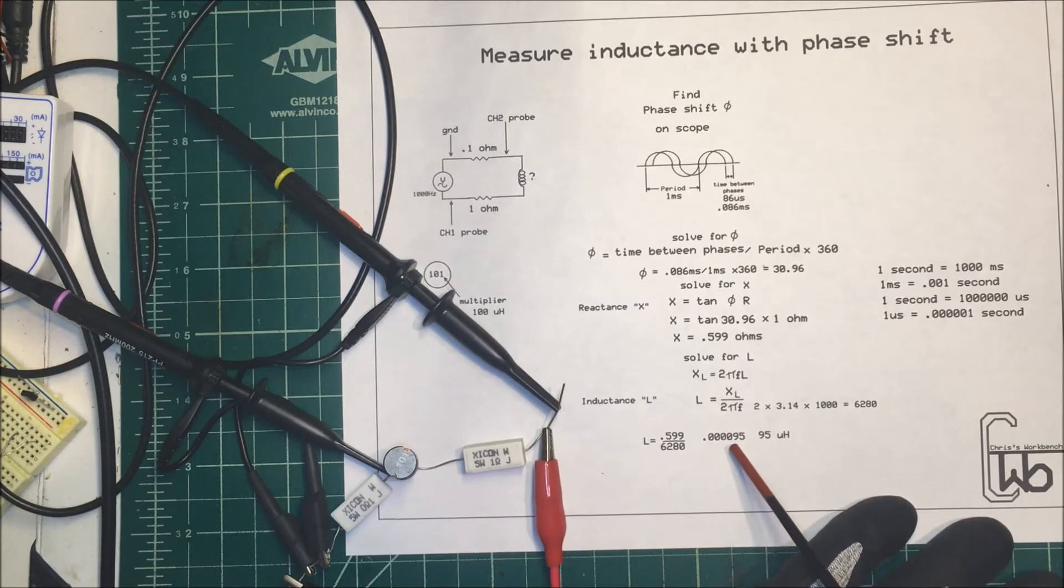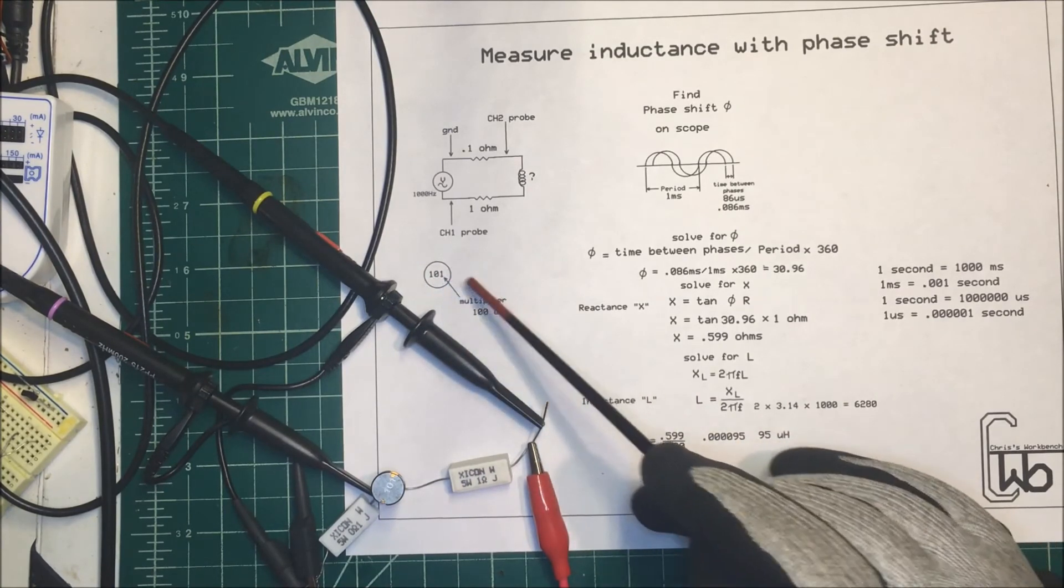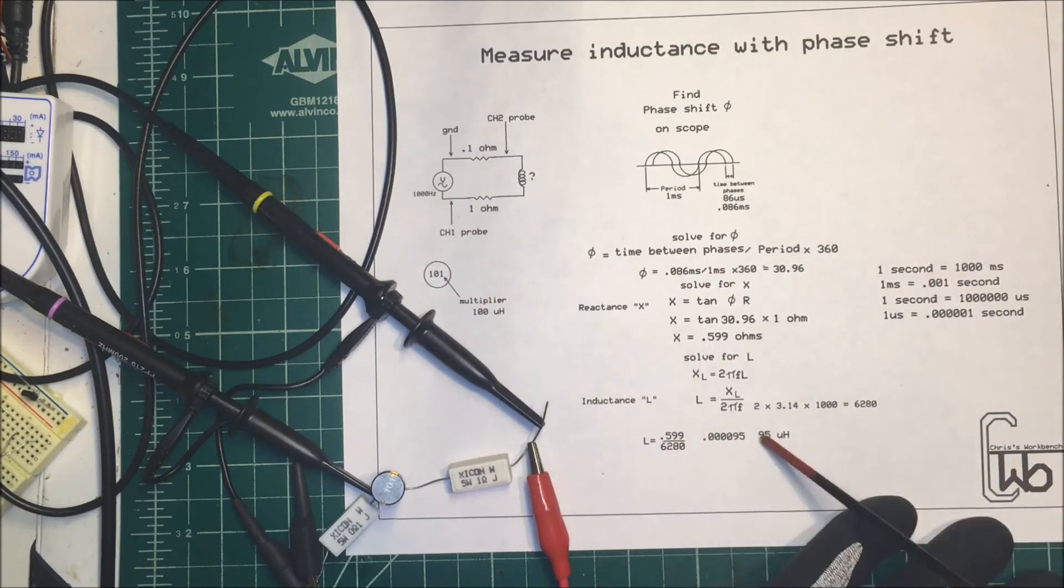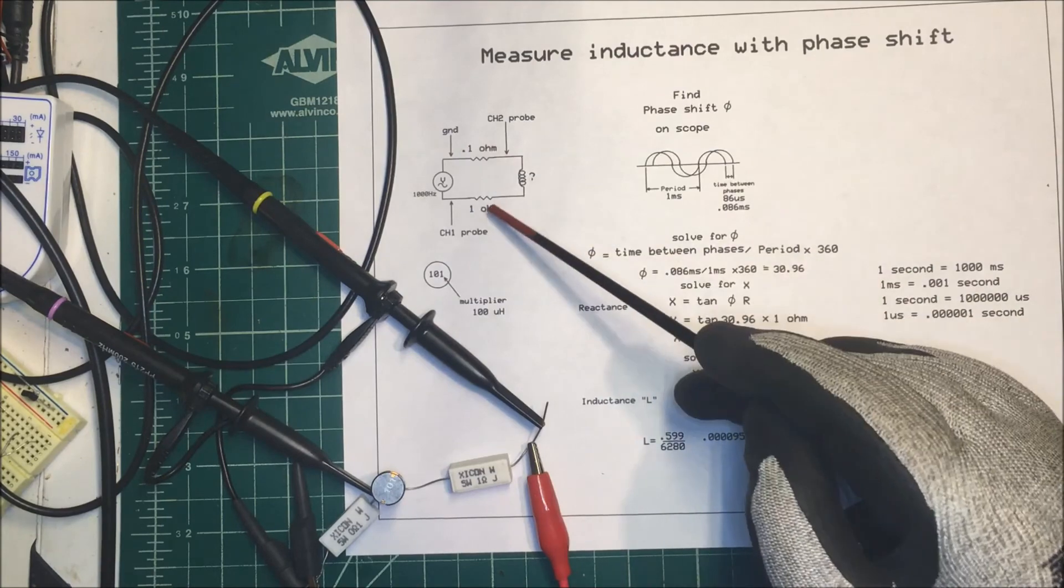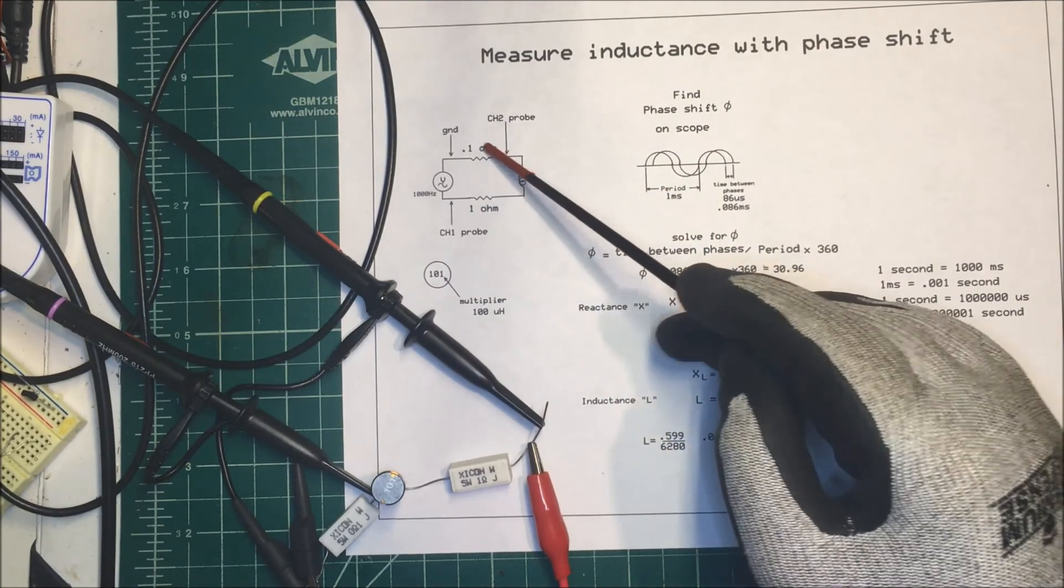That comes up to 0.00095, which is going to be 95 microhenries. Now this unit here, it's got 101 as the multiplier, so that's going to be 100 microhenries. So we're fairly close. This is a five percent resistor, I could have got a better one percent, and this could be a little lower too if you want, but that's fairly close.